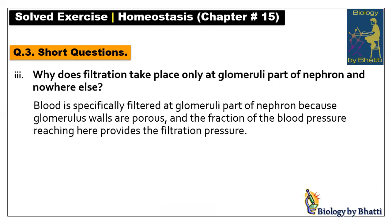Short question number three: why does filtration take place only at the glomerular part of the nephron and nowhere else? Blood is specifically filtered at the glomerular part because the glomerular walls are porous, blood enters there, the diameter of the afferent arteriole is more than the efferent, so pressure builds up and drives the filtration process.